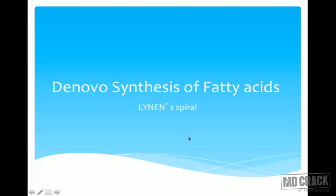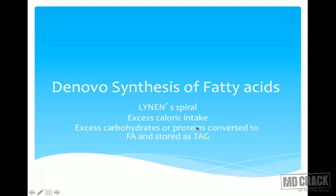When does de novo synthesis take place? It takes place whenever you are having excess calorie intake — more carbohydrates, more fat, more proteins. When there is so much caloric intake, the body decides to store those extra calories as fat. It synthesizes fatty acids and stores them in the adipose tissue. Excess carbohydrates or proteins are converted to fatty acids and stored as triacylglycerol.